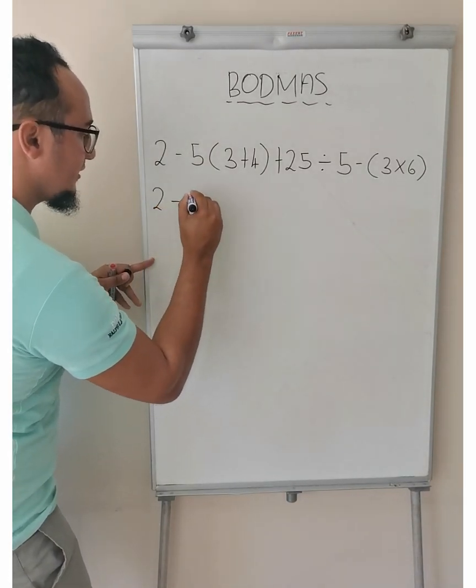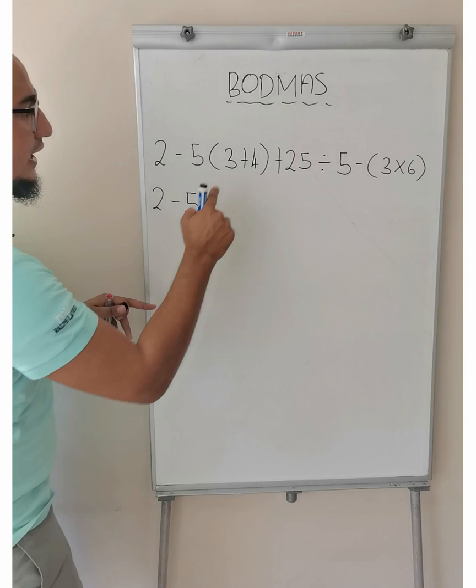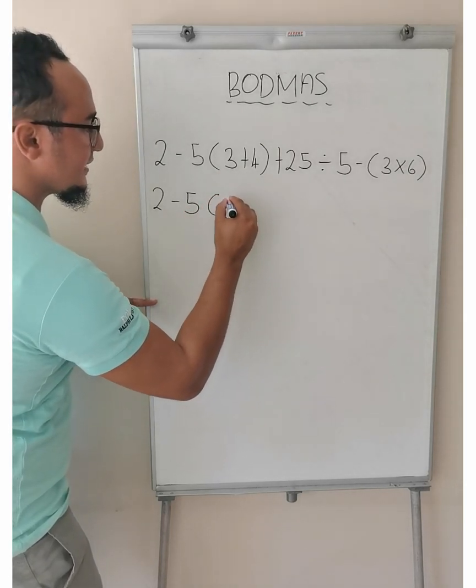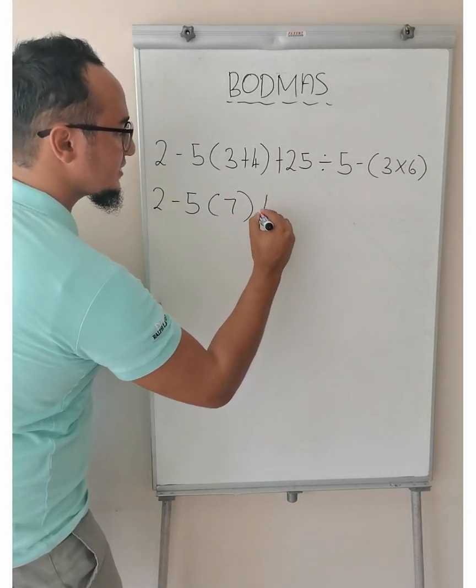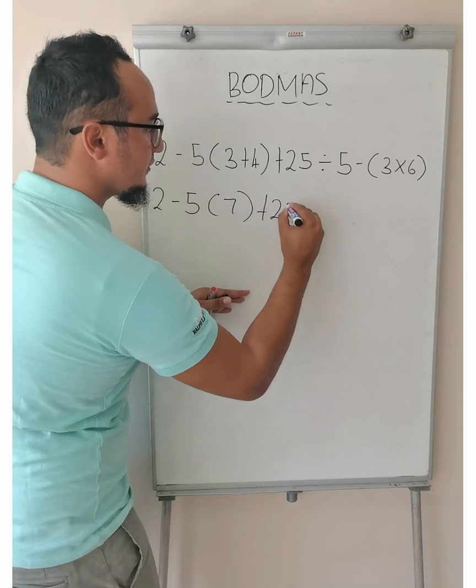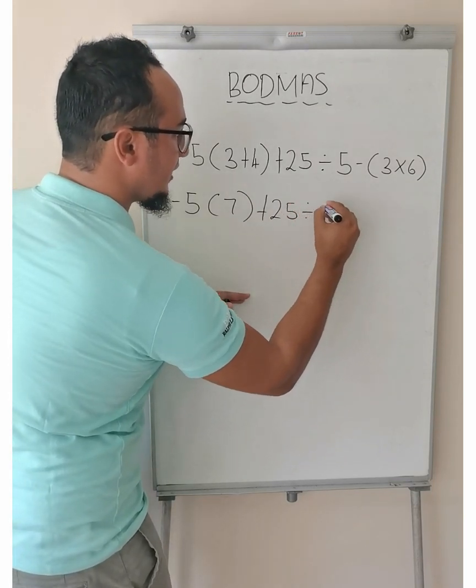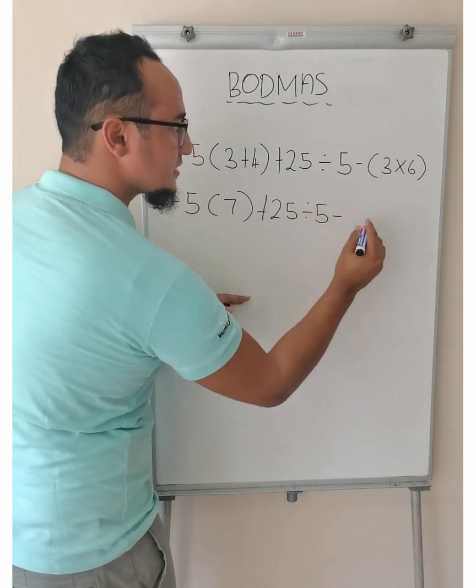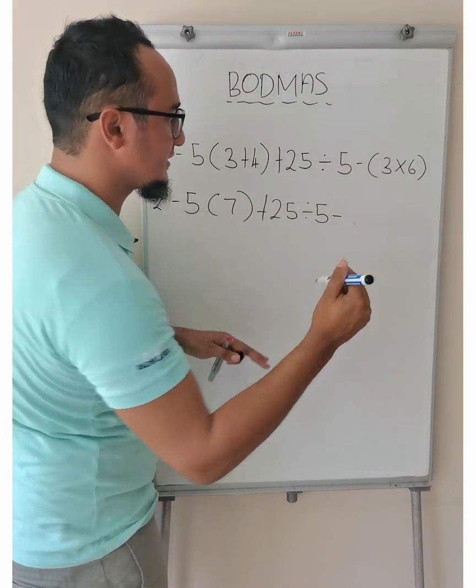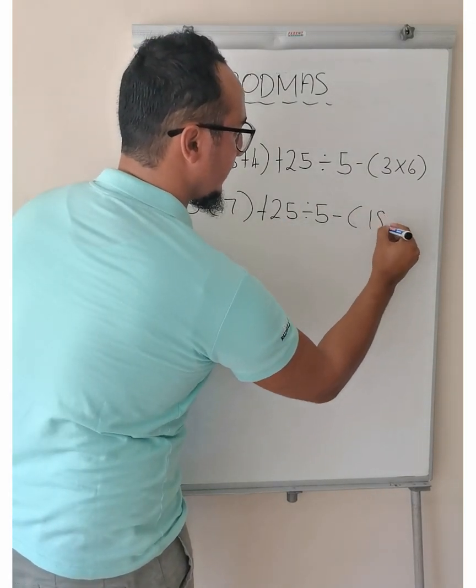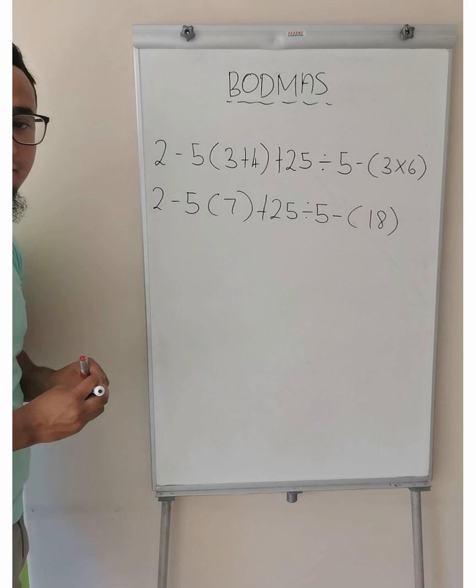Brackets first. So, the 2 has to stay 2 minus 5. And in my bracket, I have 7 plus 25 divided by 5 minus 3 times 6 is equal to 18. And now, let's simplify even further.